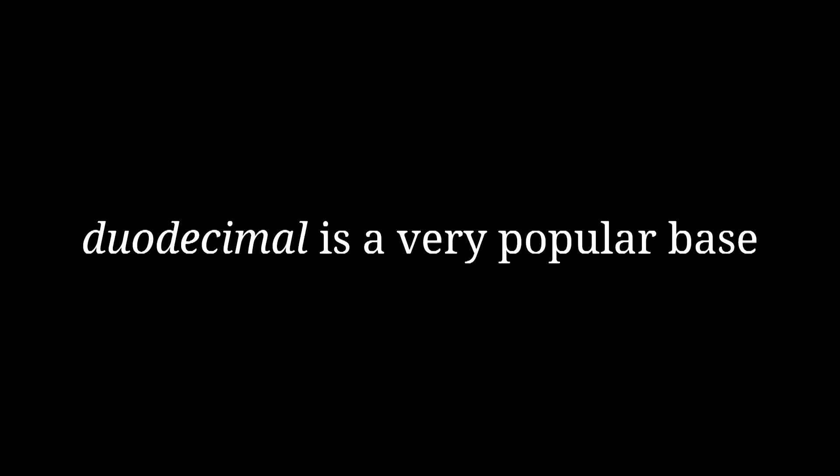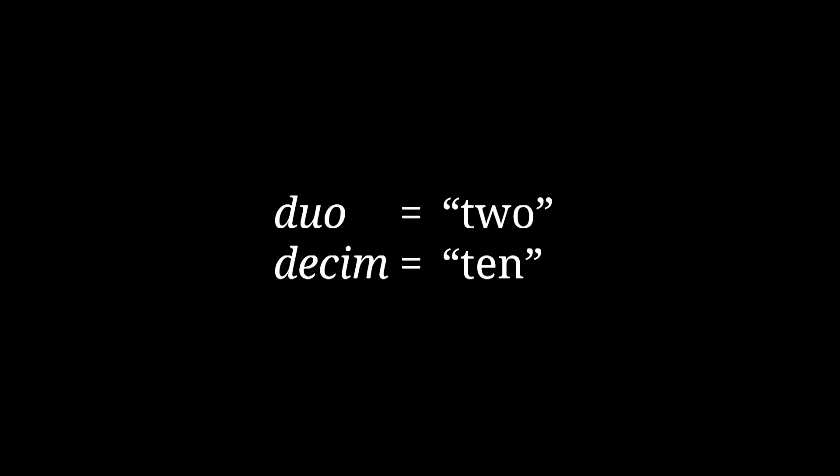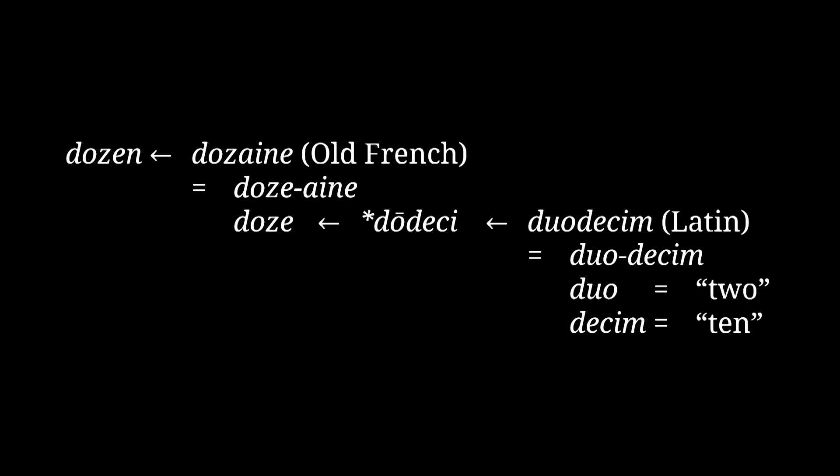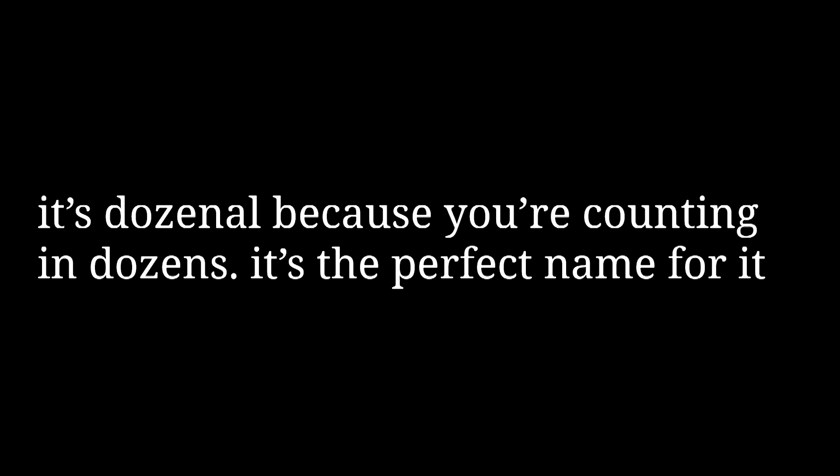For example, base 12, duodecimal, is a rather popular numbering system. Many people who like base 12 specifically dislike the name duodecimal, since it represents 12 as 2 plus 10. If you're trying to promote a numbering system where 12 is written as one zero, calling 12 '2 plus 10' doesn't feel right. For this exact reason, the name dozenal is commonly used instead — and it's a very good name. While etymologically it is technically still from something that once meant 2 plus 10, it's a much more fitting name for base 12.